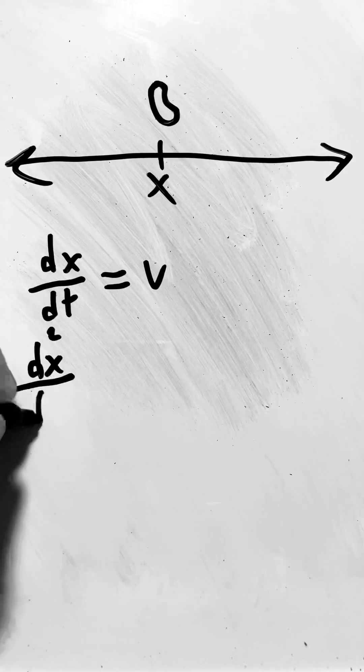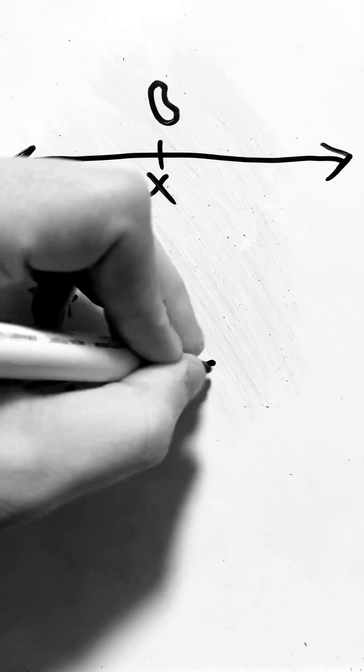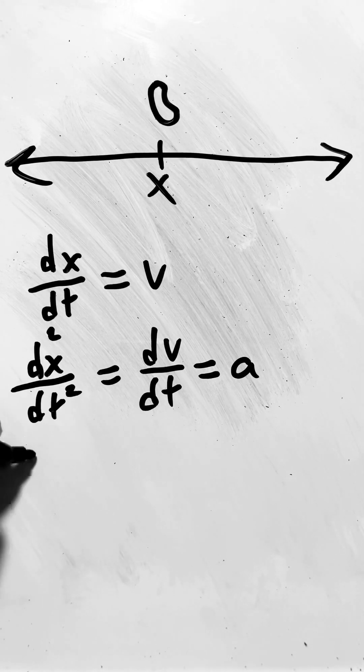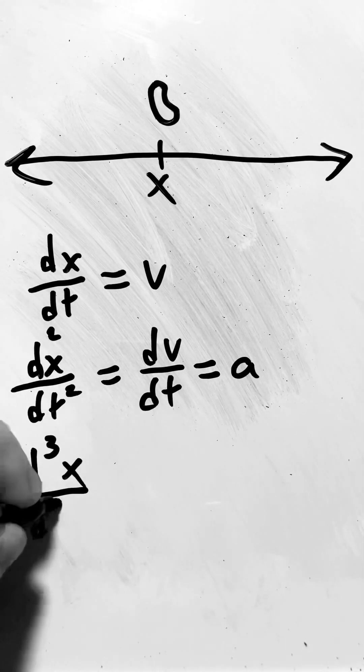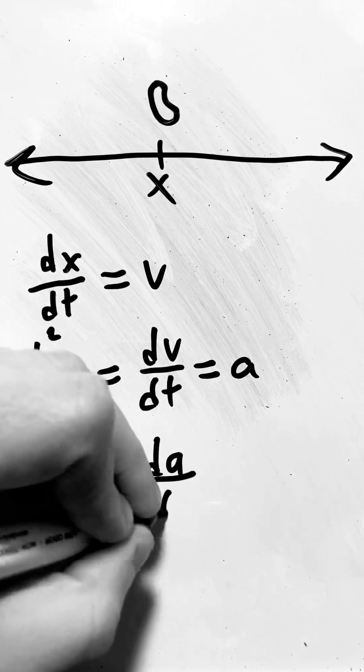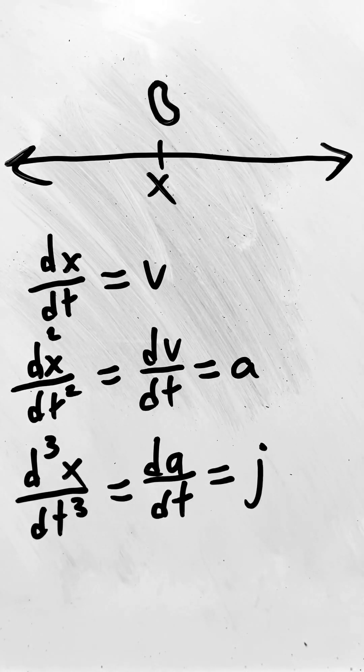The first derivative is the velocity, the second derivative is the acceleration, and sometimes we have to take the third derivative and we call this j, or the jerk. This isn't used all that commonly, but it is applicable in some situations.